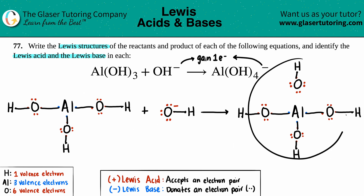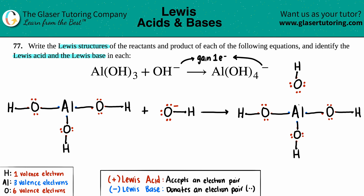Now, how are we going to put these two together? This is where the Lewis base and the Lewis acid come into play. It seems like the aluminum has no electrons to donate — it can't donate any electrons. However, the oxygen specifically has two electrons, a lone pair. The base is always the one that donates that electron pair. So since that oxygen has two electrons it can share with the aluminum, those two electrons turn into a bond — these electrons come in to that aluminum and now they share a bond.